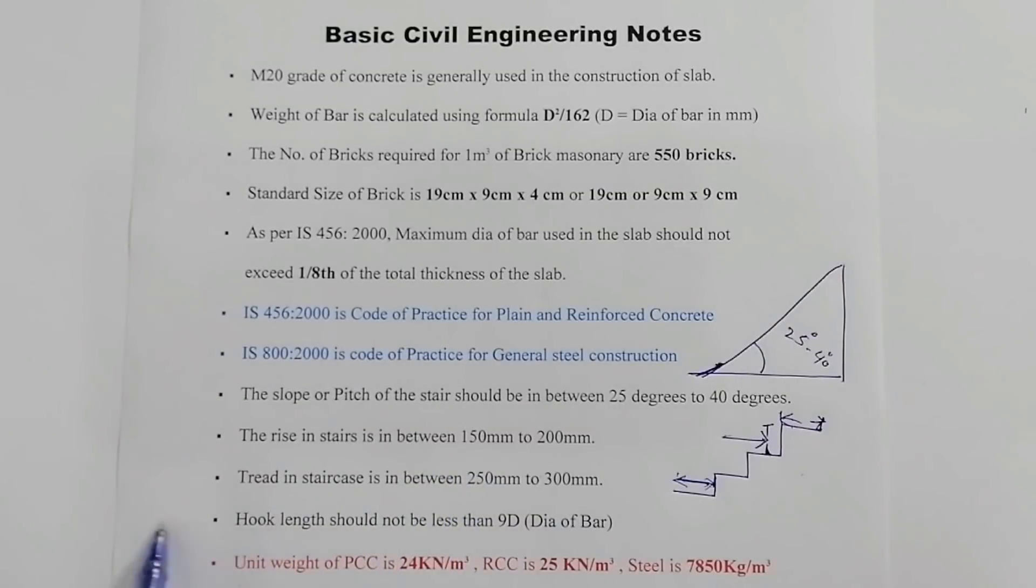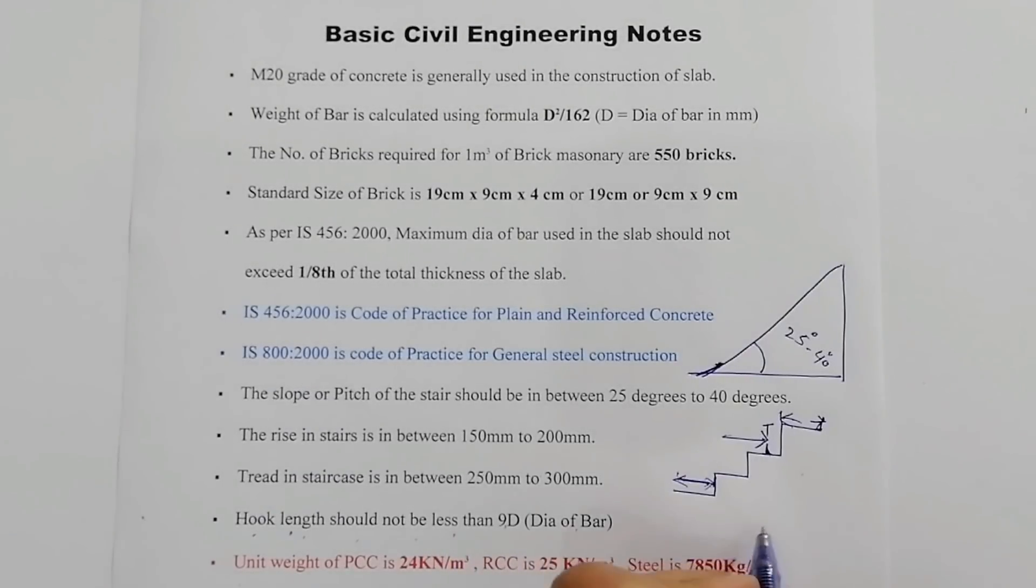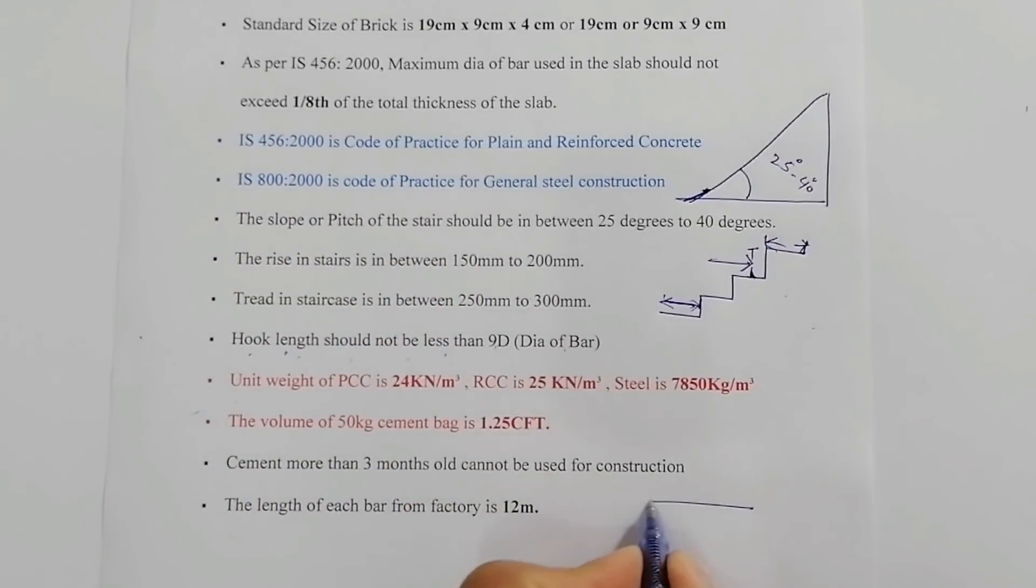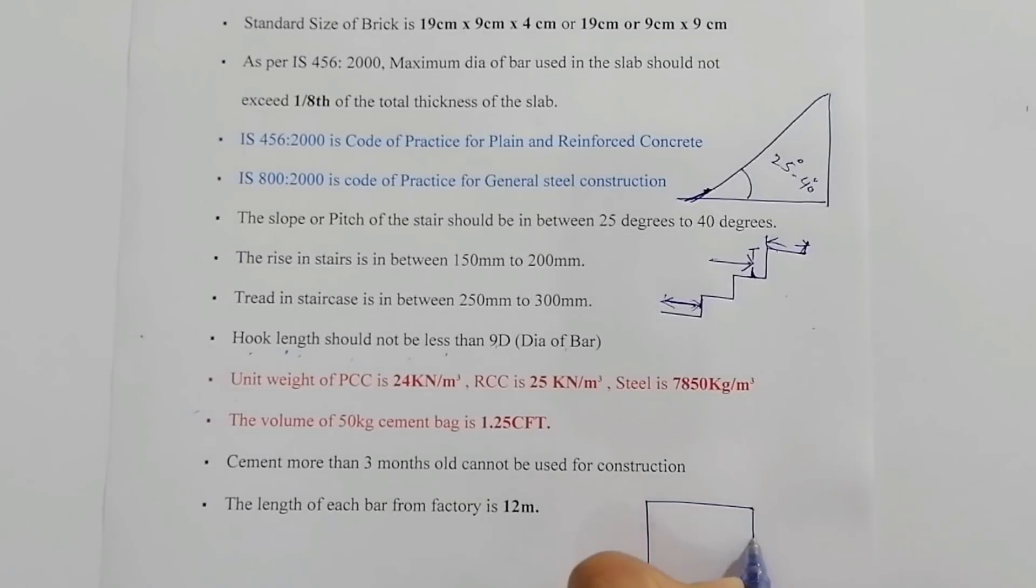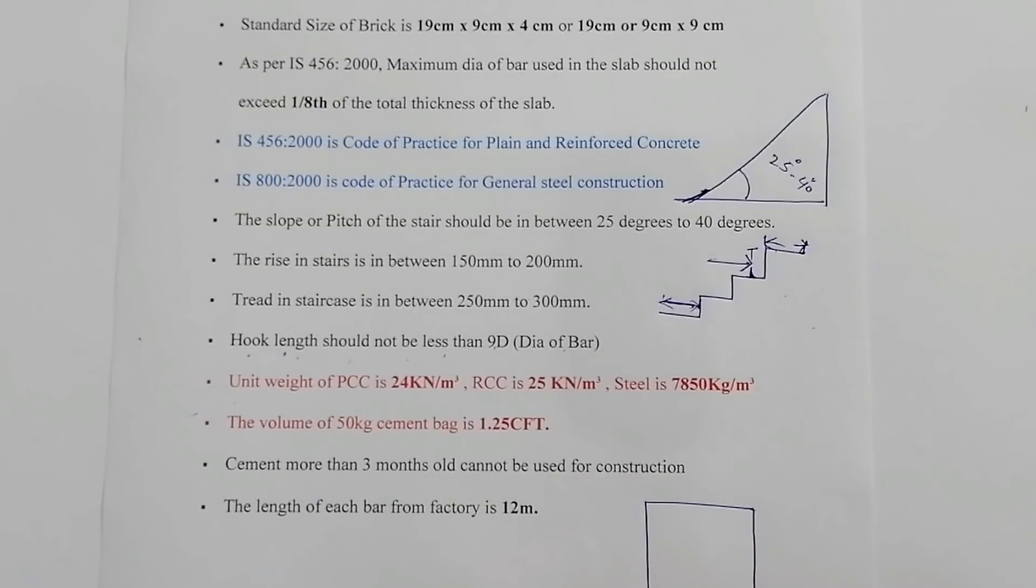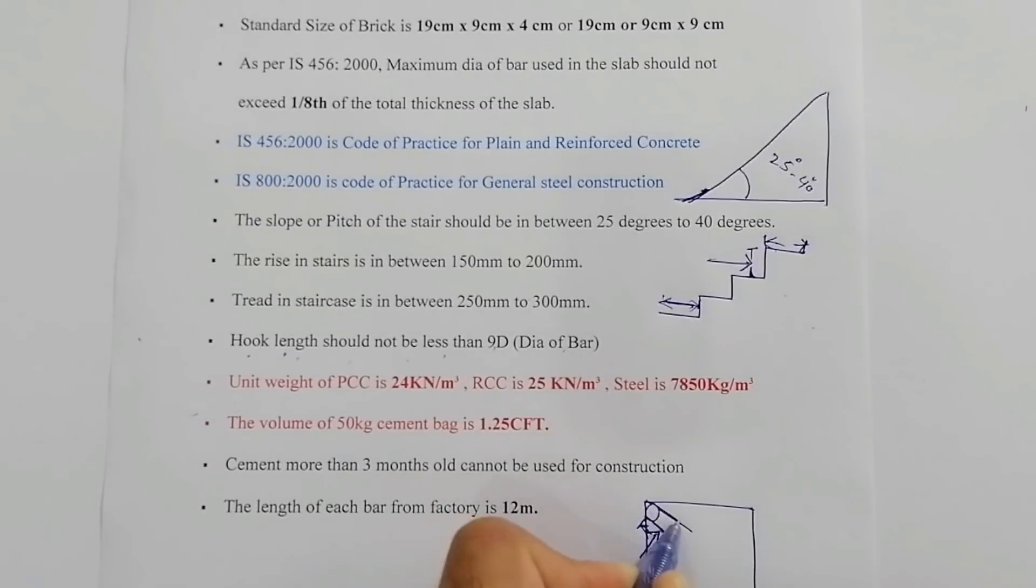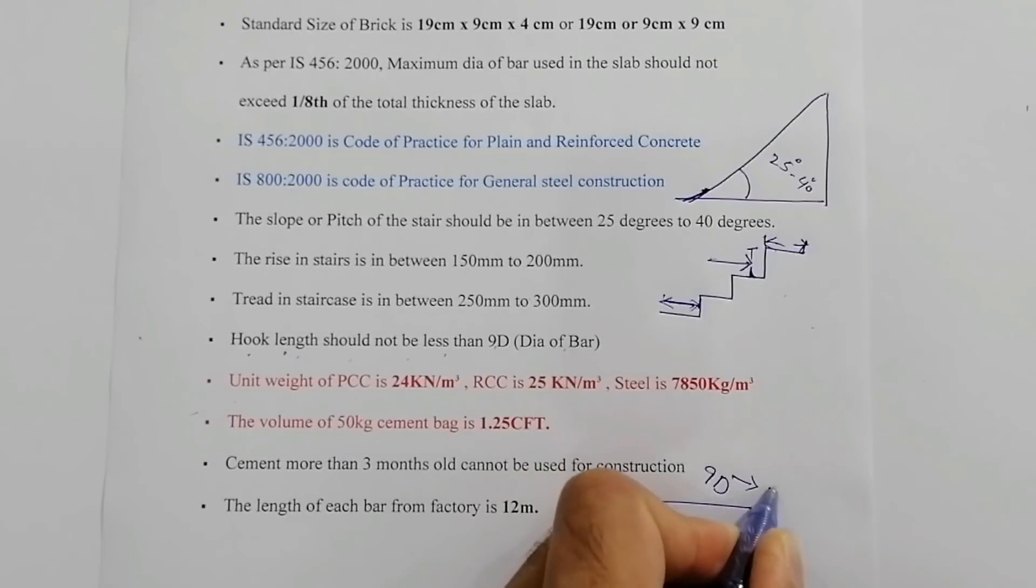Hook length should not be less than 9D where D is diameter of bar. What is hook? You can see here—this is lateral tie, and this is hook. This hook length from this point to this one should be, or we can take the length of this hook, 9D where D is diameter of bar.